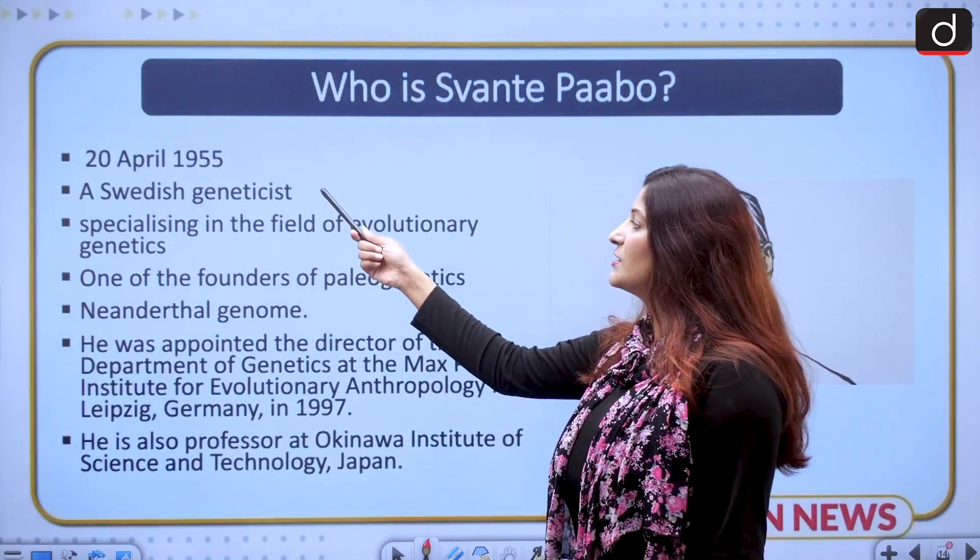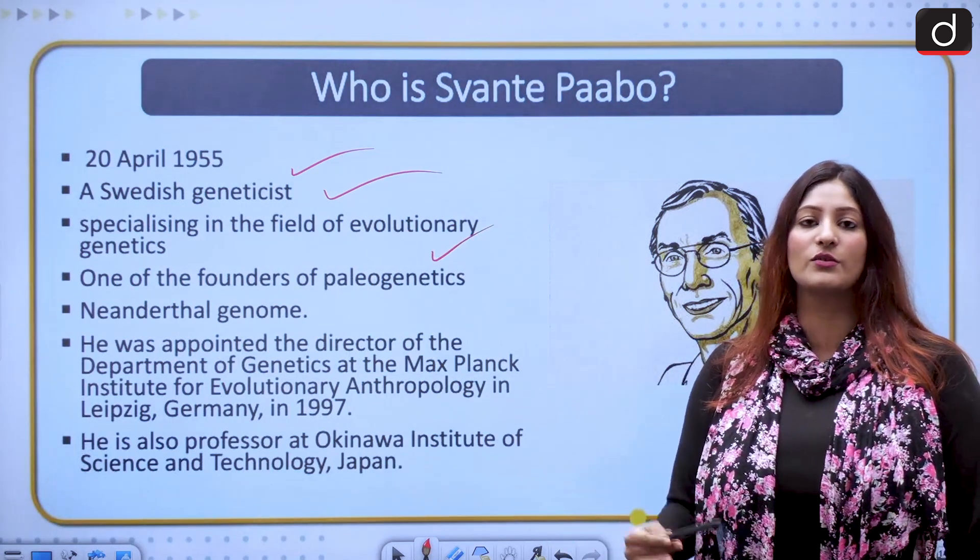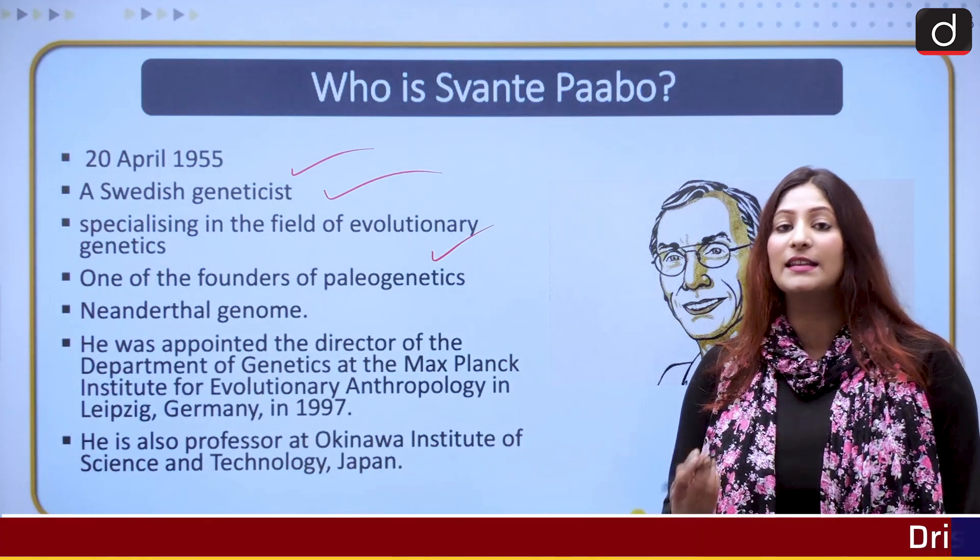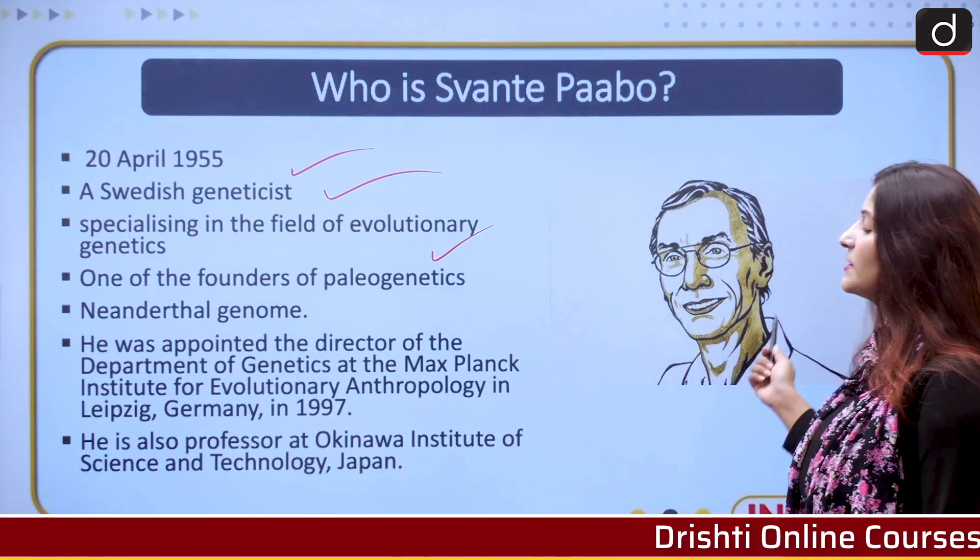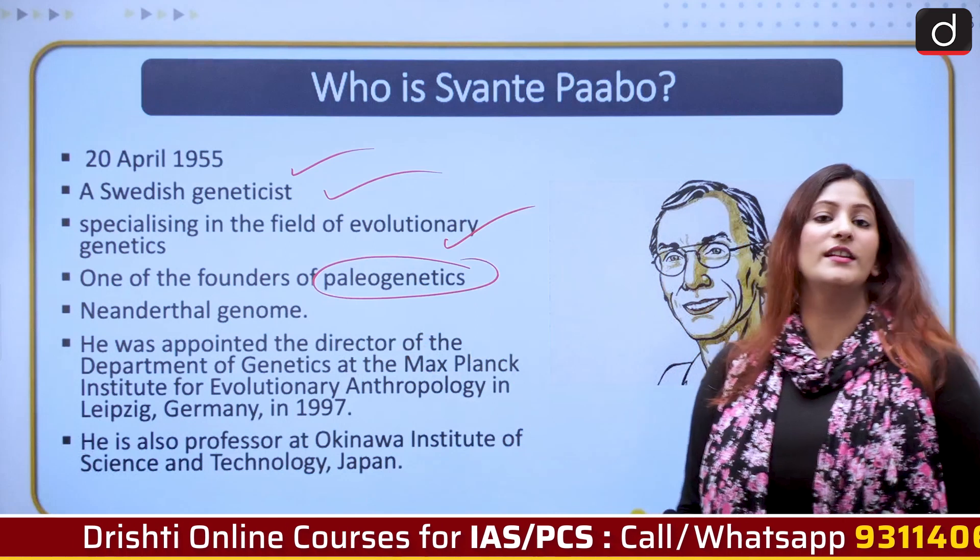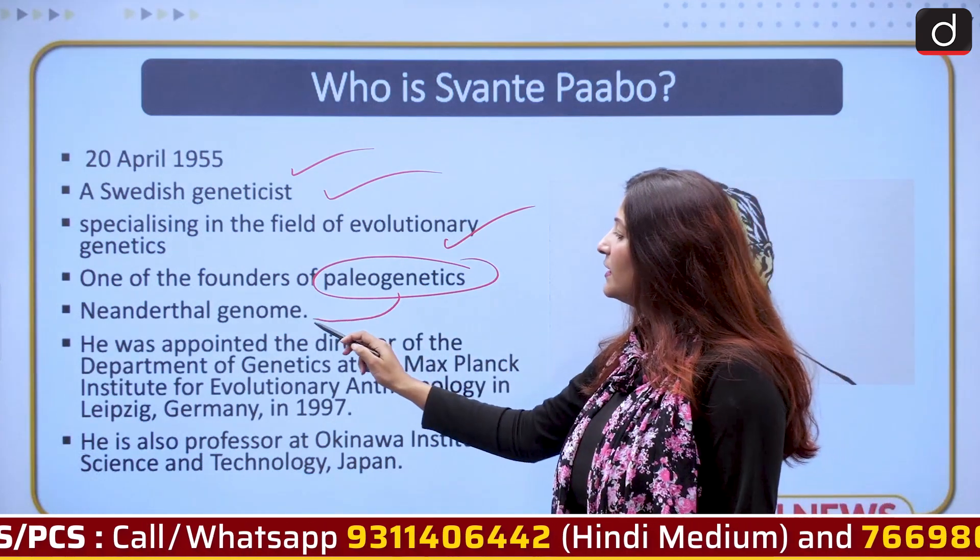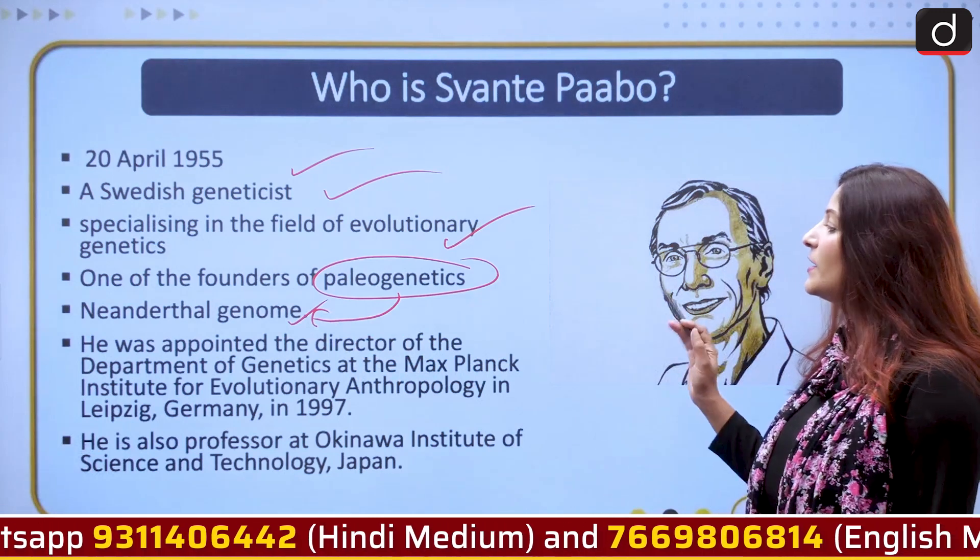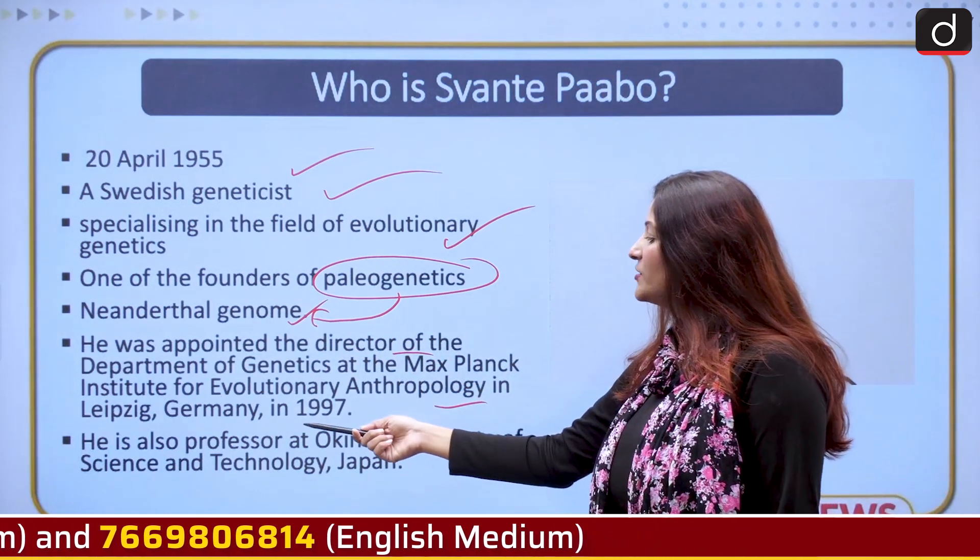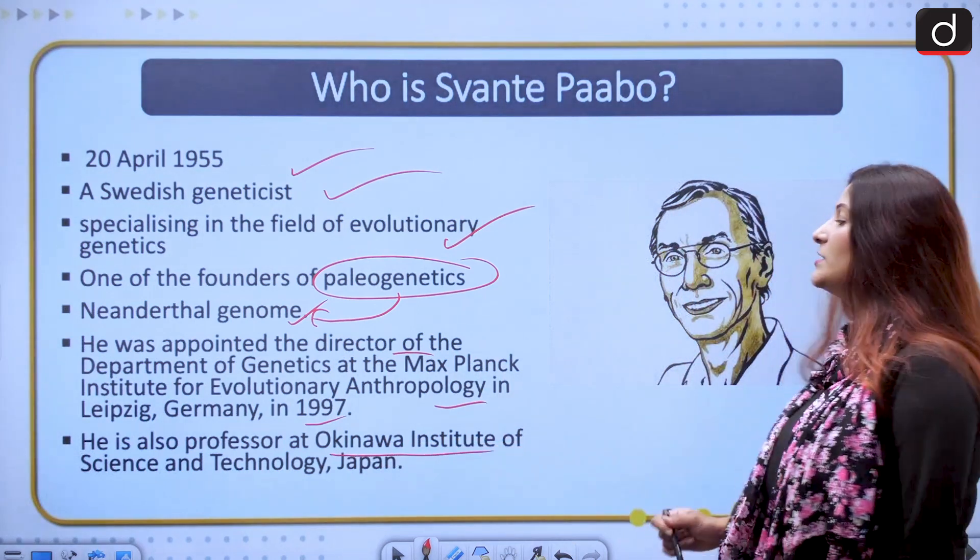Let us talk about Dr. Svante Pääbo. He is a Swedish geneticist, born on 20th April 1955. He specialized in the field of evolutionary genetics, how genes used to evolve. He was interested in his mother's field until his father got the Nobel prize in 1982. Tell me the name of the father in the comment segment. His father also got awarded in the field of medicine in 1982 and after that he changed his field. He is one of the founders of paleogenetics. Paleogenetics is a field in which genes of fossils can be studied. His work was in Neanderthal genome. He was appointed director of the Department of Genetics at the Max Planck Institute for Evolutionary Anthropology in Leipzig, Germany in 1997. He is also a professor at Okinawa Institute of Science and Technology, Japan.